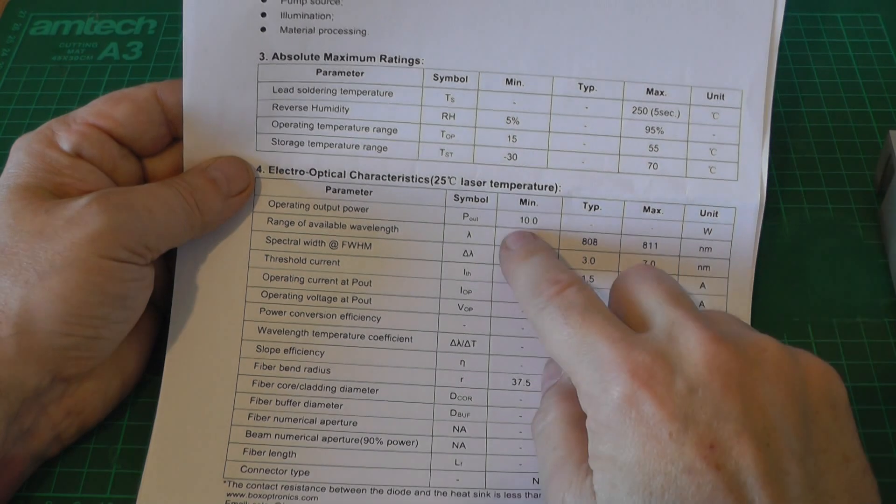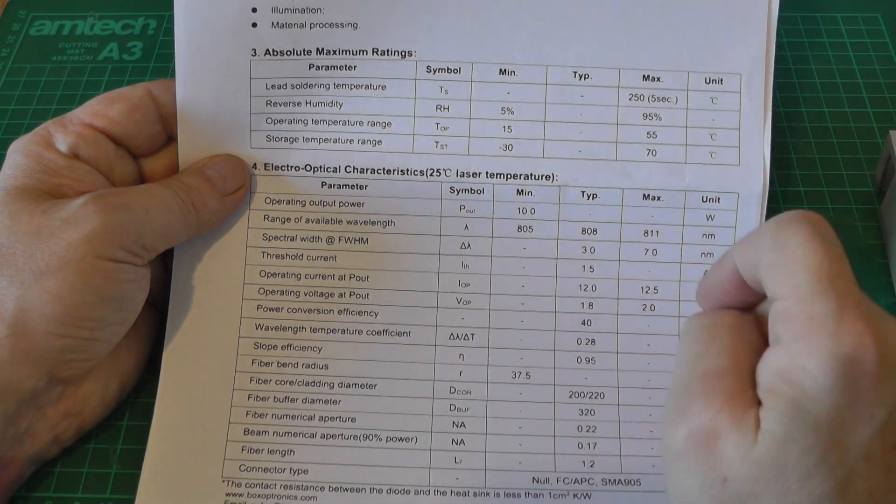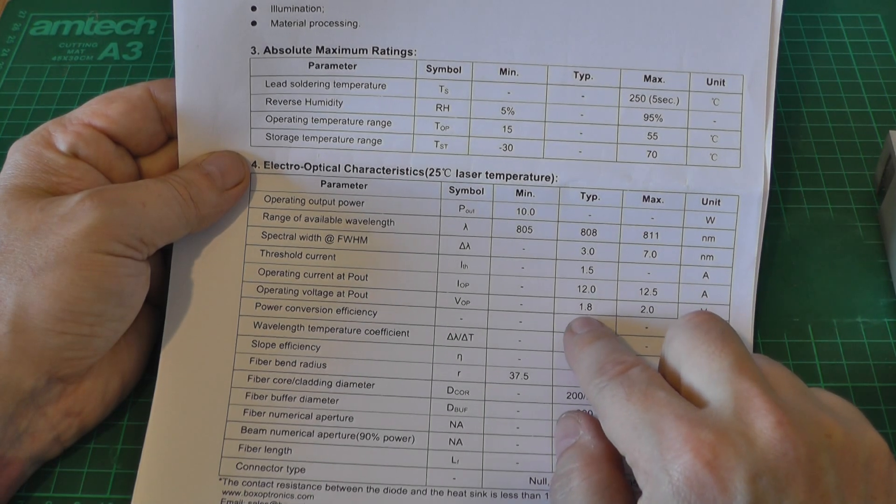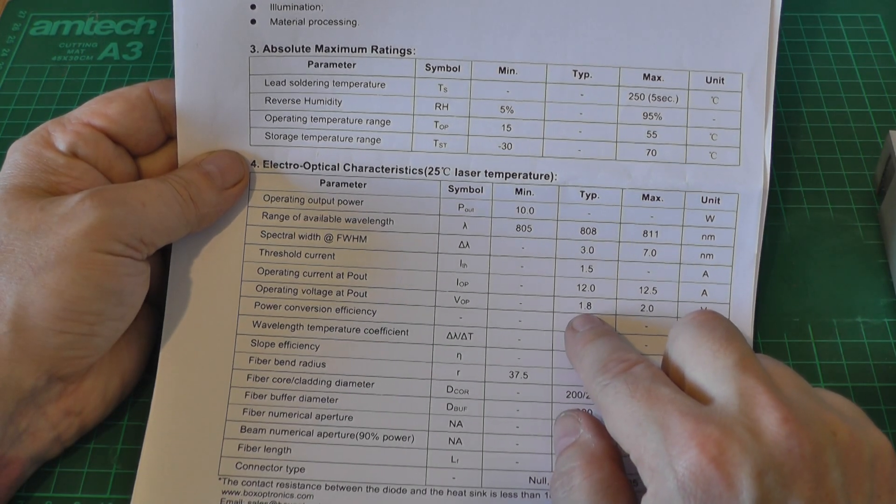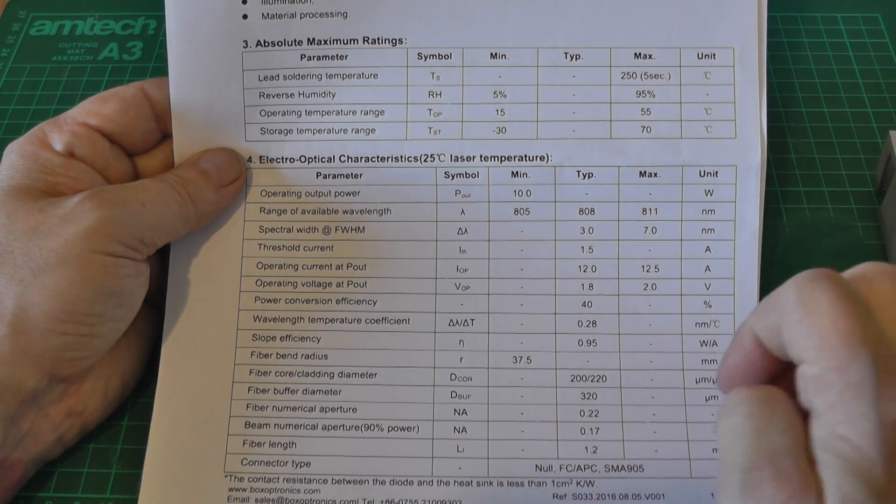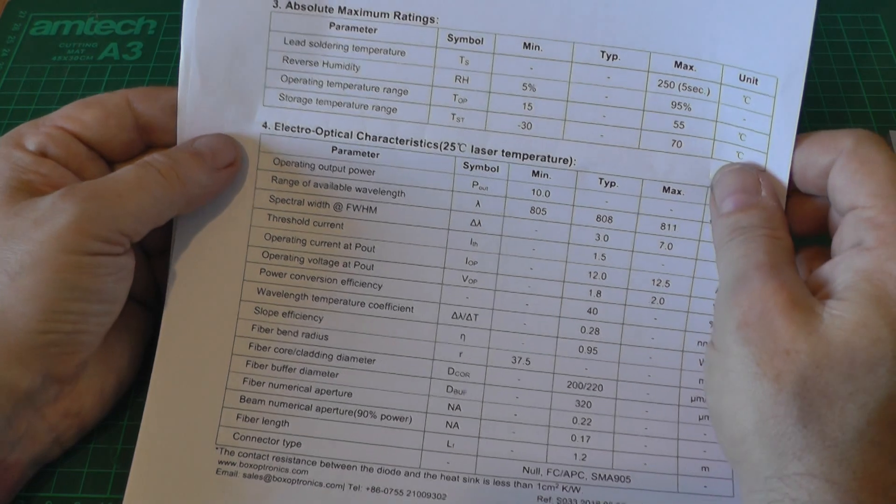Here's the data sheet for this. We can see that the power out is 10 watts at 808 nanometers. The current is 12 amps and the operating voltage is 1.8 volts. So we need a power supply capable of delivering about 2 volts at up to 10 amps. I'm never going to drive this at 12.